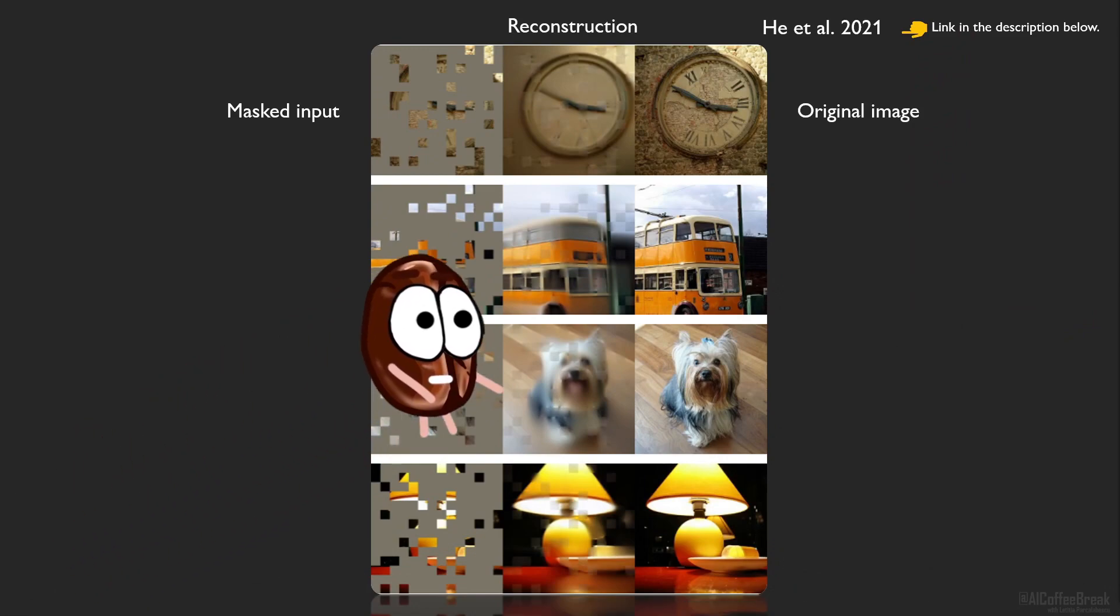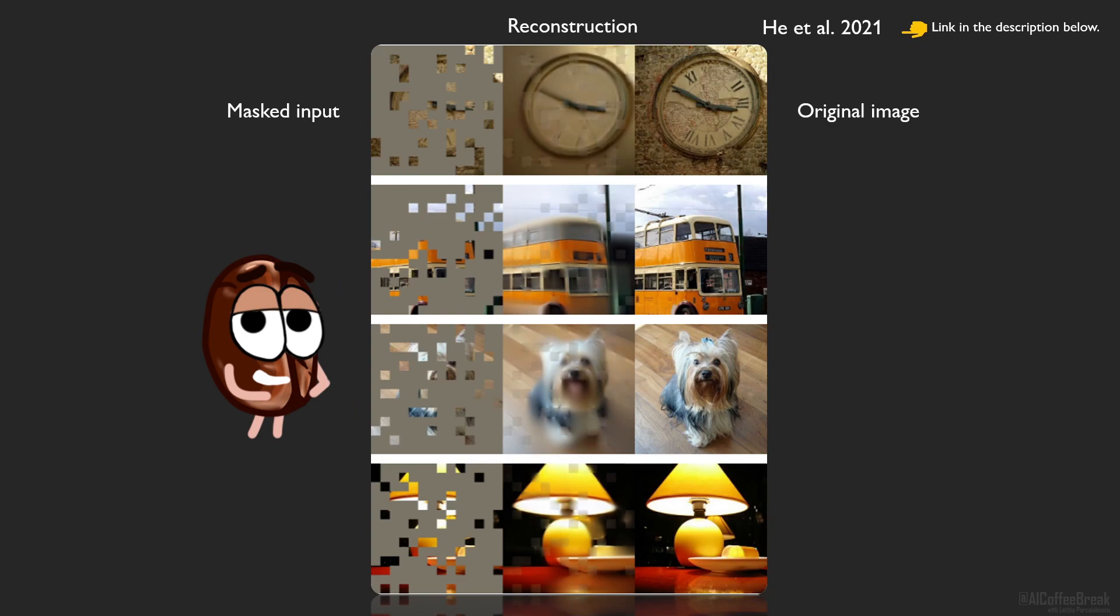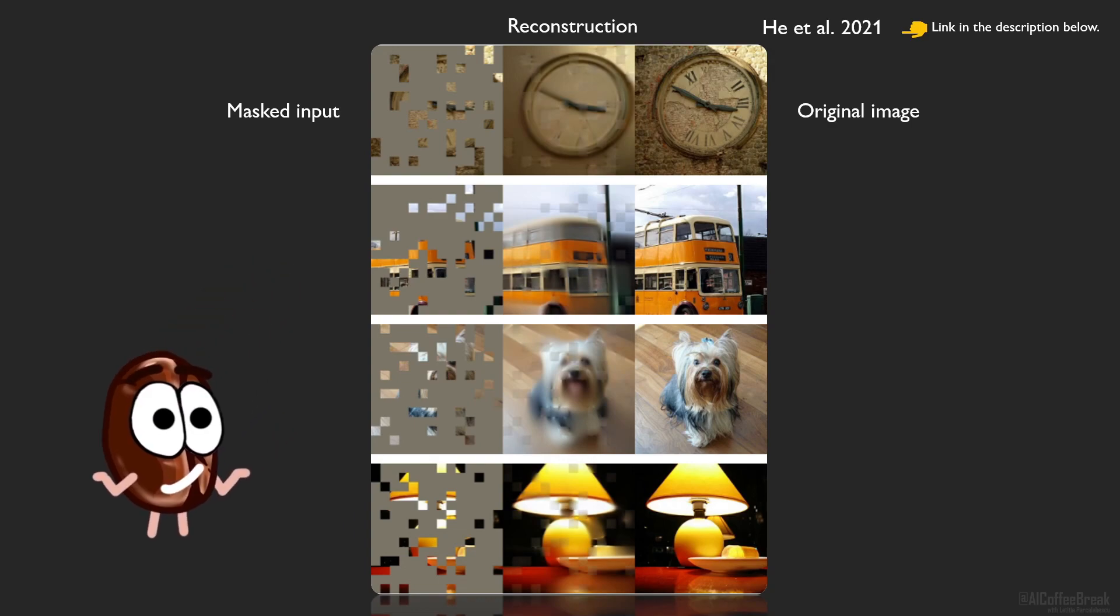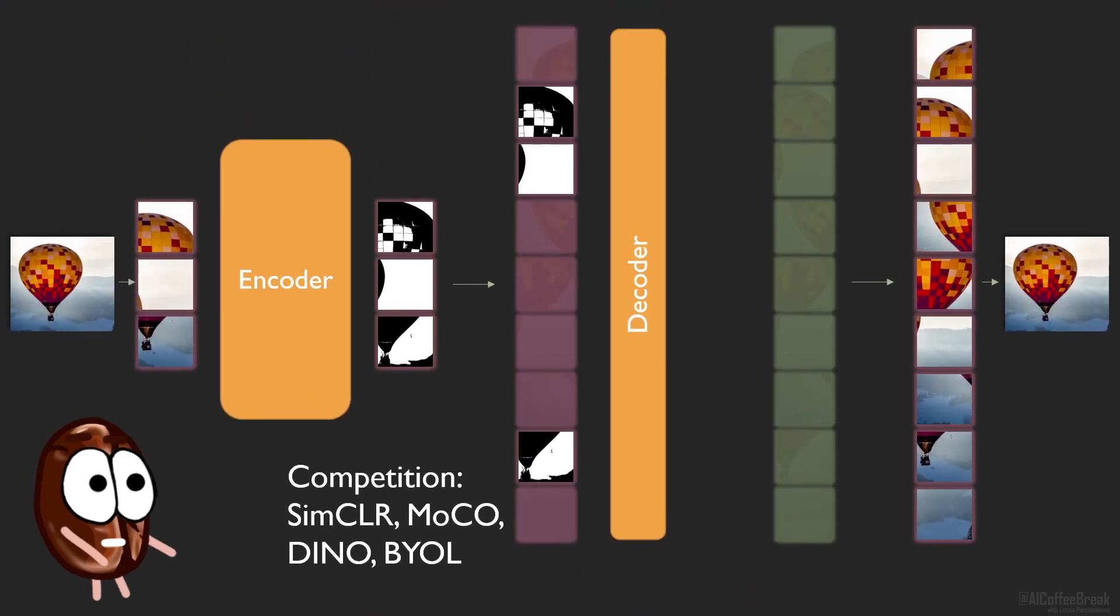And look, the reconstructions look kind of blurry. And Ms. Coffee Bean thinks that one, two papers further, this will be working for higher resolution too. But you know, the reconstruction quality was not the goal of this masked autoencoder anyway, but the learned representations over here.